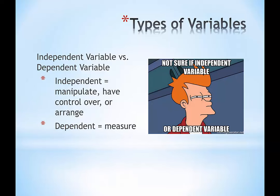The dependent variable is the thing that we measure. This is the thing we don't have control over—when our participant shows up to be in our study, we have no idea what the behavioral response is going to be, and that's what we measure. We tend to measure it either quantitatively or qualitatively.